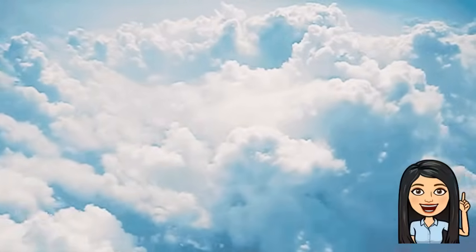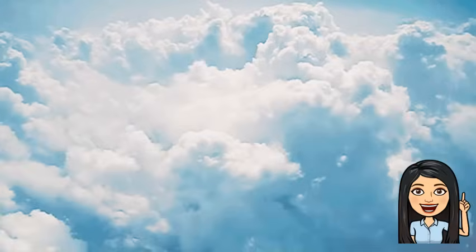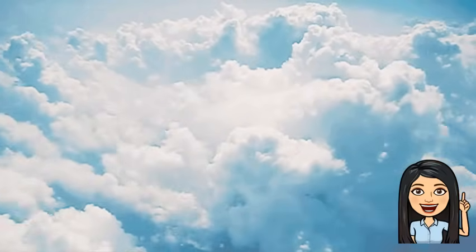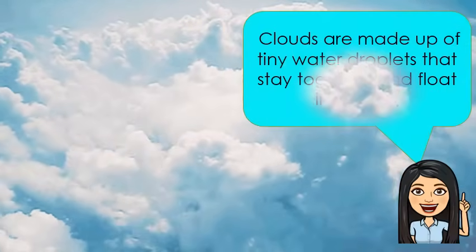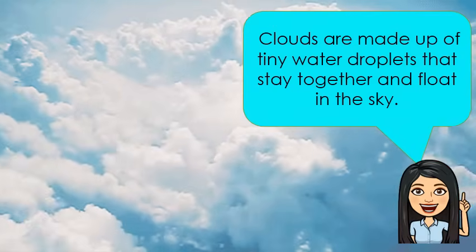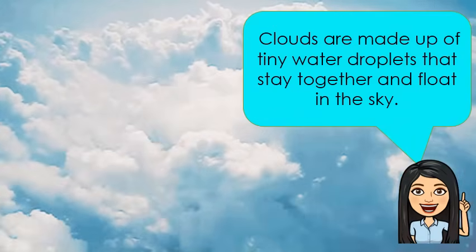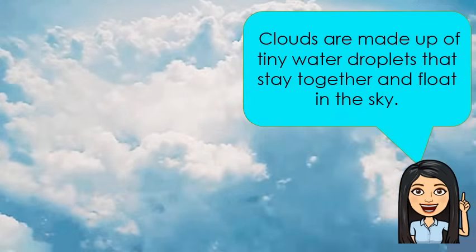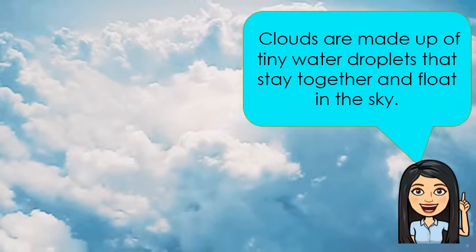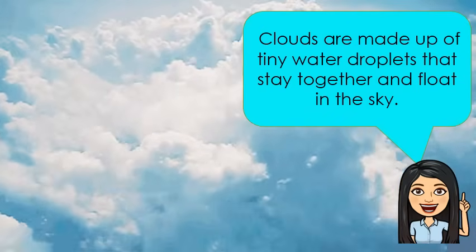What can you see in the sky during a clear sunny day? Can you see white cottony objects floating in the sky? They are clouds. Clouds are made up of tiny water droplets that stay together and float in the sky. They have different shapes and sizes. Clouds help people identify the weather for the day.